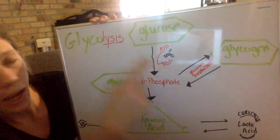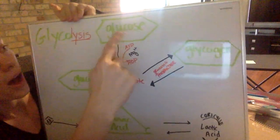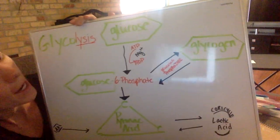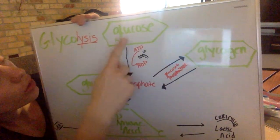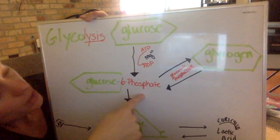We have our glucose or glycogen molecules. Glucose we'll probably get from some sort of carbohydrate. We have our glucose source, our sugar, and it can be broken down into glucose 6-phosphate.